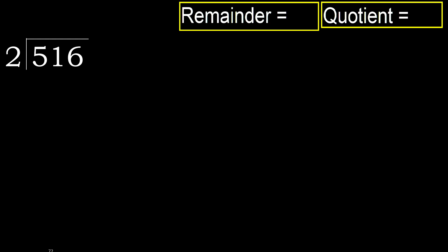516 divided by 2. 5 is not less, therefore with 5: 2 multiplied by which number is nearest to 5, but not greater?